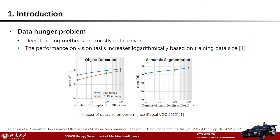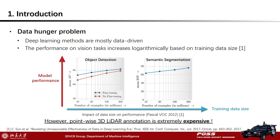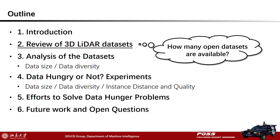Semantic segmentation has been studied for decades. In recent years, deep learning methods have made significant progress on this problem. These deep models are mostly data-driven, so they may face a data hunger problem. Former studies have found that performance on several vision tasks increases with larger training data size — the same holds for object detection and semantic segmentation. However, for semantic segmentation, point-wise 3D LiDAR annotation is extremely expensive, which leads to limited data size for usage. This raises the question: how many open datasets are available?